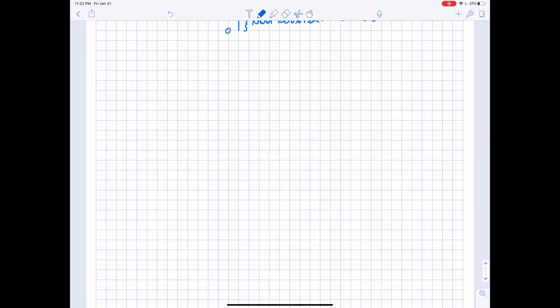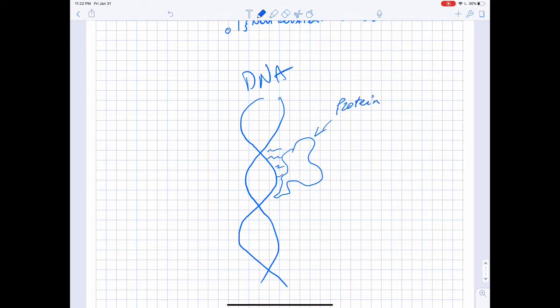Now let's start talking about some examples of non-covalent bonds. What I just drew is DNA, and we have a protein. The DNA can have an interaction with protein thanks to non-covalent bonds.